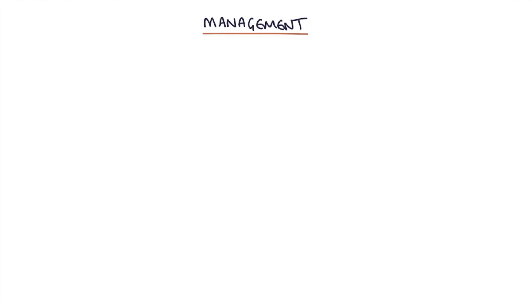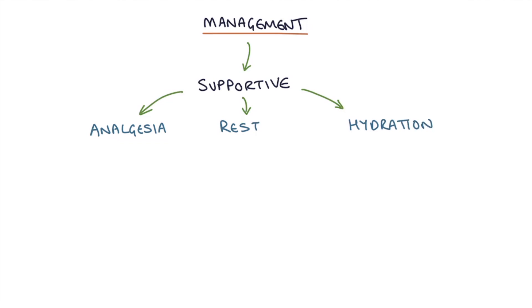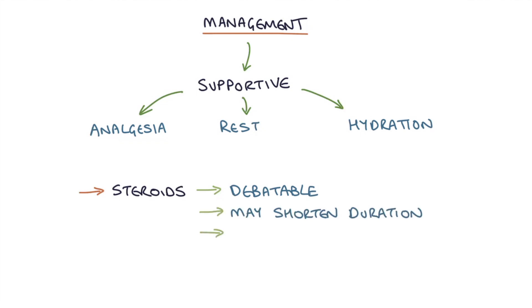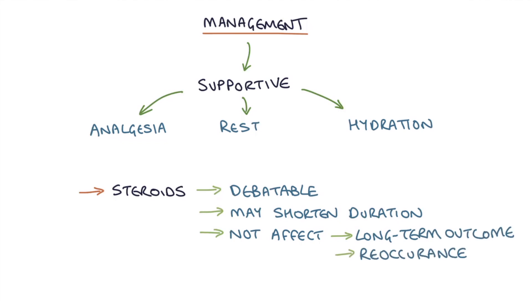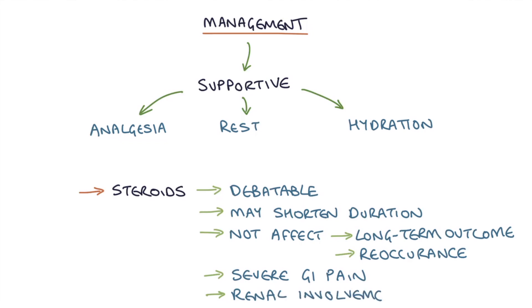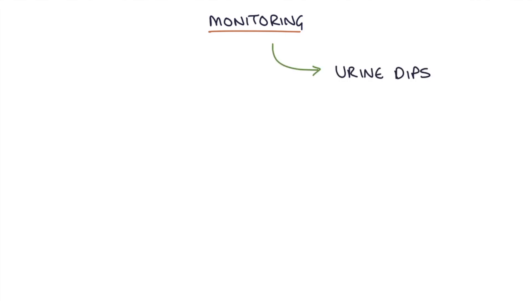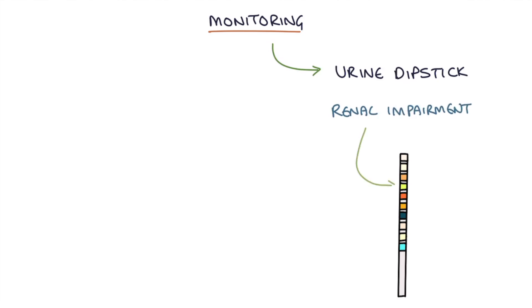Management is supportive with simple analgesia, rest, and adequate hydration. The use of steroids is debatable — evidence suggests they may shorten the duration of illness but do not affect long-term outcome or rate of recurrence. Steroids may be considered by specialist doctors in patients with severe gastrointestinal pain or renal involvement. Patients with HSP should be monitored closely with repeated urine dipstick to monitor for renal impairment and blood pressure to monitor for hypertension.